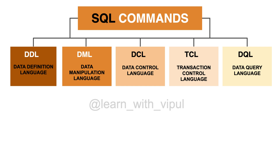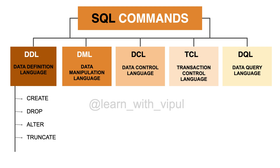Let's start with DDL. DDL stands for Data Definition Language. The set of SQL commands that we use to define or modify a table or a view in a database comes under this category. The first command is CREATE — if you want to create a new table or a view, you can use the CREATE command. If you want to delete a table or a view, we can use the DROP command. If you want to modify the structure of a table — for example, change the data type of a column or add a new constraint — then we can use the ALTER command. Then we have the TRUNCATE command: if you have a table and you want to delete all the records from it, then we can use the TRUNCATE command.